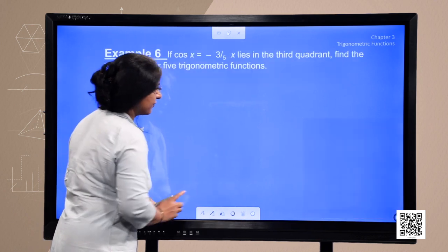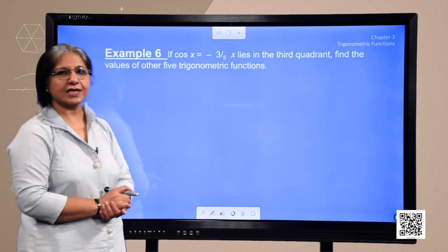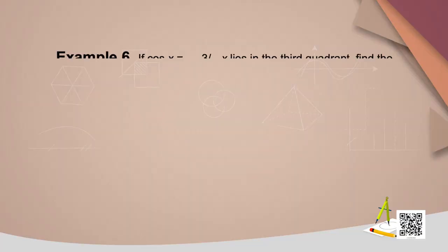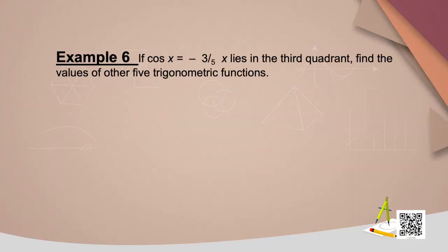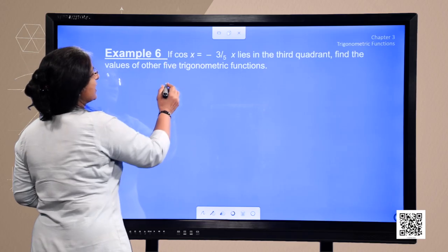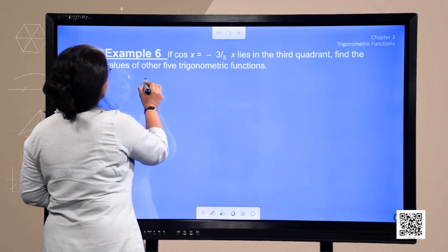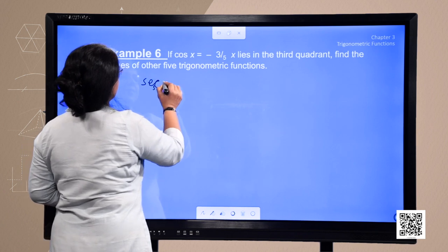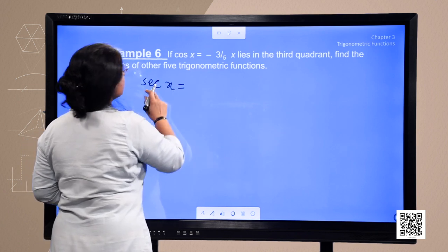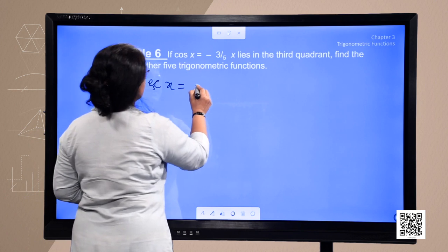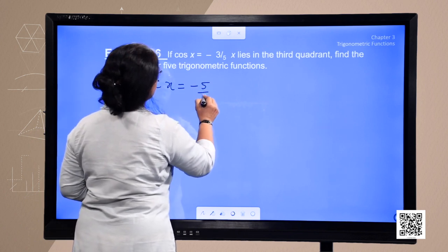Now we shall do a few examples to make the concept more clear. Example: given cos x equals minus 3 by 5, where x lies in the third quadrant, find the values of the other five trigonometric functions. From cos x, we can easily find sec x since it is the reciprocal — sec x will be minus 5 by 3.